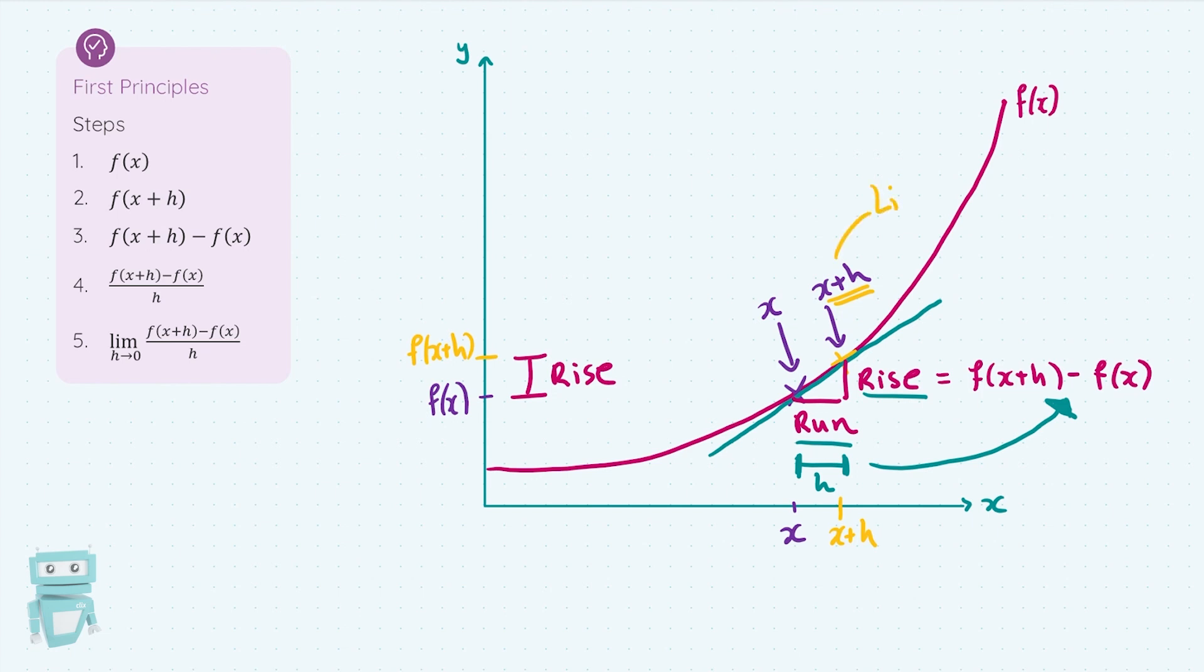This is why we set the limit as h goes to zero in our steps, because this will reduce h to something really, really small. So h will actually jump down and be tiny, virtually zero. So that distance will be right on top of our point x. So doing that limit as h goes to zero brings the point as close as possible to x, and then gets the slope of that tangent line.